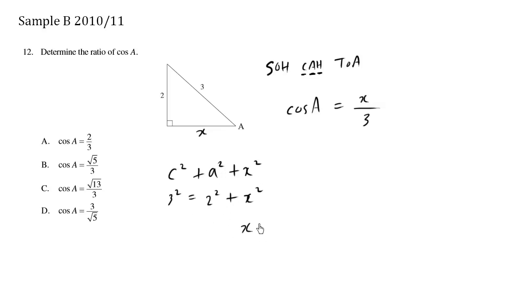So x squared equals, 3 squared is 9, minus 2 squared is 4. So x equals, 9 minus 4 is 5. You take the square root of both sides, you get the square root of 5.